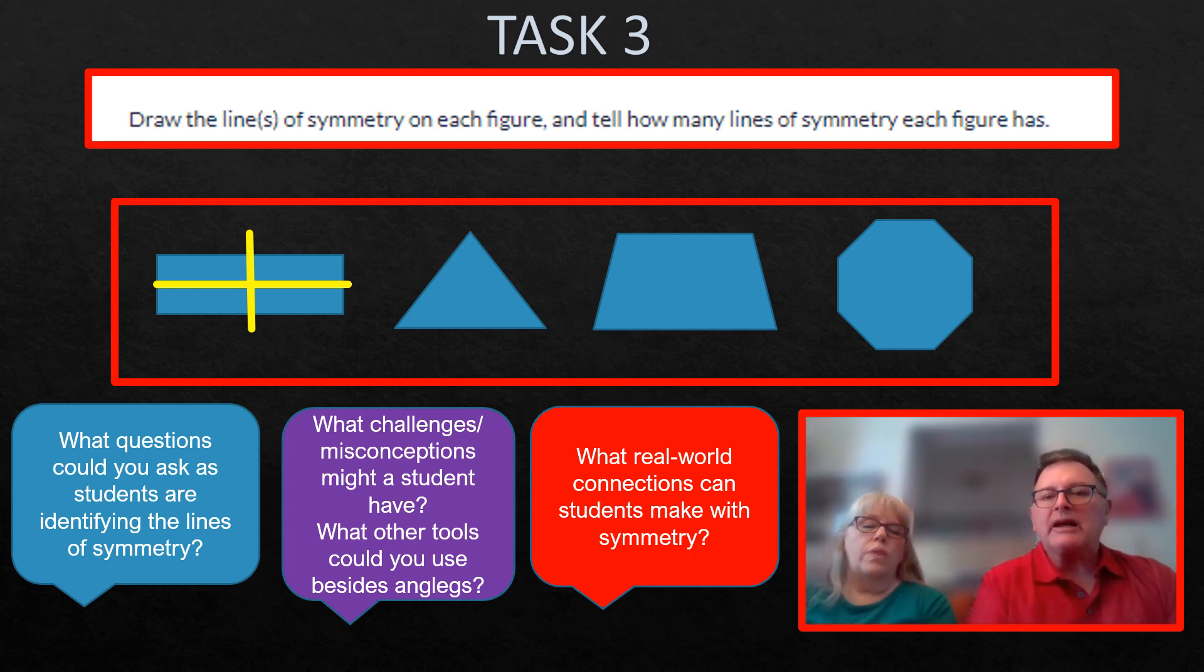What about this triangle here? Well, I don't think that that's an equilateral triangle. So in that case, it would only have one line of symmetry. It looks to me like it's an isosceles triangle. And where would that line of symmetry be? It would be from the top vertex to the middle of the bottom. And again, paper folding would help. Even though you've built it with anglegs, paper folding would be a critical strategy here to use.